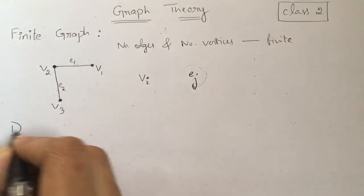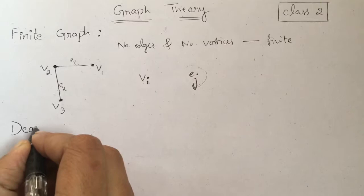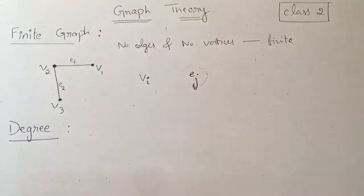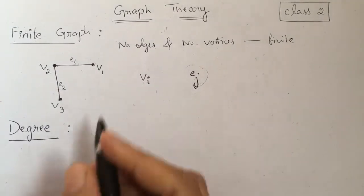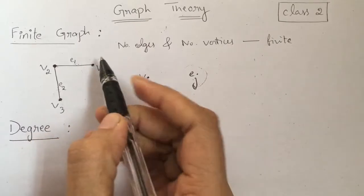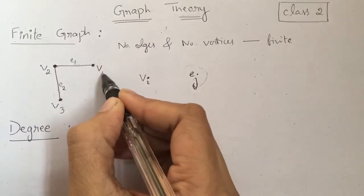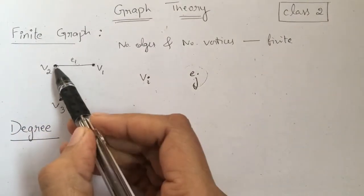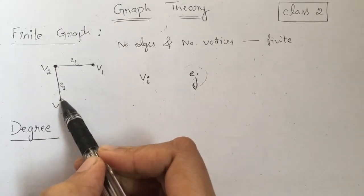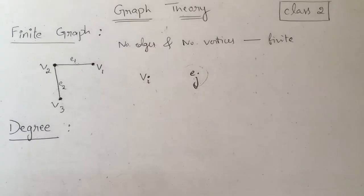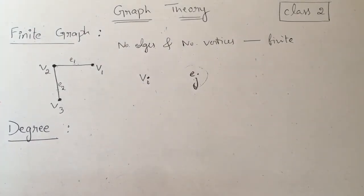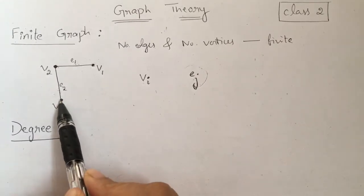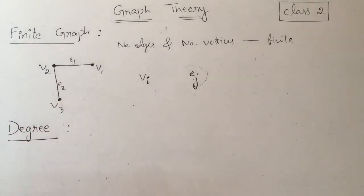The next definition is degree of a vertex and degree of a graph. In this graph, for vertex v1 there is only one edge connected to it. For vertex v2 there are two edges, and for vertex v3 there is only one edge. The degree of a vertex means the number of edges incident on the vertex, with any self loop counted twice.